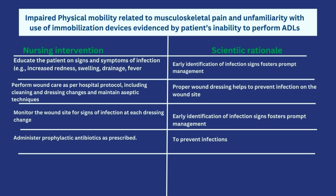The next intervention is to perform wound care as per hospital protocol, including cleaning and dressing changes while maintaining aseptic technique. This means ensuring all equipment used for wound dressing is properly sterilized, following the correct wound dressing protocol — the number of swabs, the direction of wiping from clean to dirty, and so on. The scientific rationale is that proper wound dressing helps prevent infection at the wound site.